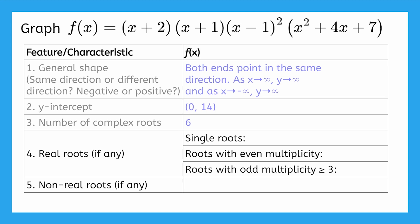In your notes, you should have already used the 0 product property to find the function's roots. There will be single roots at negative 2 and negative 1, where the function will simply cross through the x-axis. And we can see that the factor x minus 1 has multiplicity 2, which tells us that the root at x equals 1 will be tangent to the x-axis.